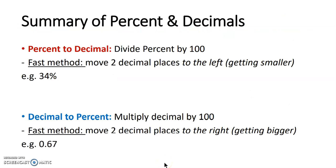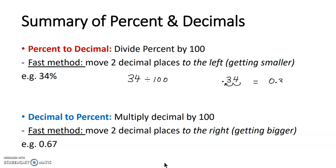In summary, if you want to change a percent to a decimal, you divide the percent by 100. Fast division by 100 means moving the decimal two places to the left, because you're making the number smaller. For example, if you take 34%, you divide by 100 — moving two decimal places to the left — so 34% becomes 0.34.